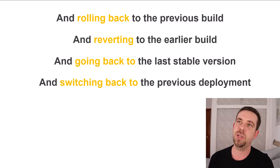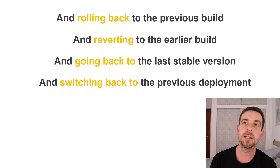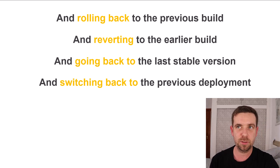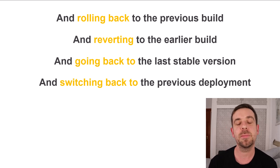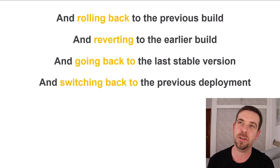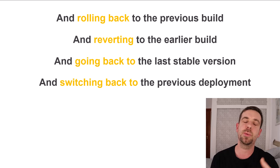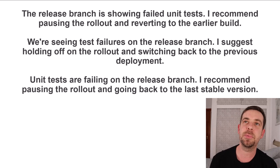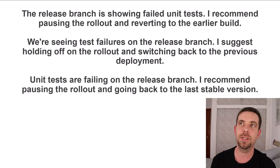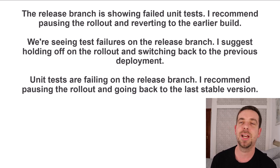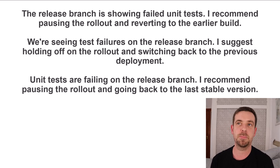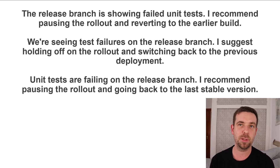For rolling back, you have several verb options: rolling back to the previous build, reverting to the earlier build — to revert means to go back — going back to the last stable version, or switching back to the previous deployment. These all express the same idea with little difference. Examples: The release branch is showing failed unit tests — I recommend pausing the rollout and reverting to the earlier build. We are seeing test failures — I suggest holding off and switching back to the previous deployment. Unit tests are failing — I recommend pausing the rollout and going back to the last stable version.